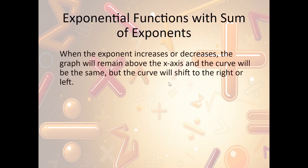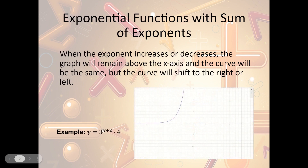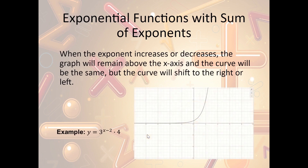Now, what if we do a sum of exponents — meaning we add something to the exponent? That will cause the graph to shift to the right or to the left. For instance, y = 3^(x+2) · 4: because this is in the exponent, we always go opposite. You would think x + 2 means we slide right, but because it's in the exponent, x + 2 becomes a shift to the left two units. Conversely, y = 3^(x−2) · 4 causes a shift to the right 2 units — we always go opposite when talking about exponents.